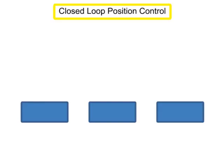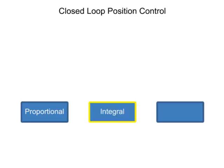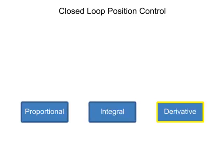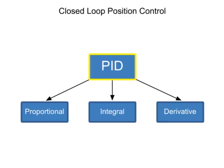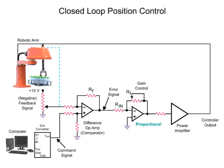A closed-loop control system for position control is comprised of proportional, integral, and derivative circuits and is often referred to as a PID. The operation of PID mode control is demonstrated in the following robot arm position circuit.